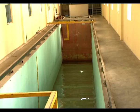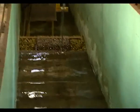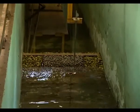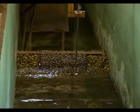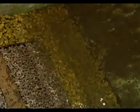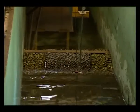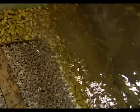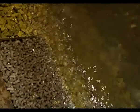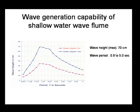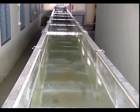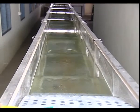The shallow water flume is 85 meters in length and is fitted with a piston as well as hinged type wave maker. Unidirectional, regular and random waves can be generated. Tests on scaled models of ships and offshore structures are carried out in this facility. For flow visualization around bodies, a glass flume facility is also available.